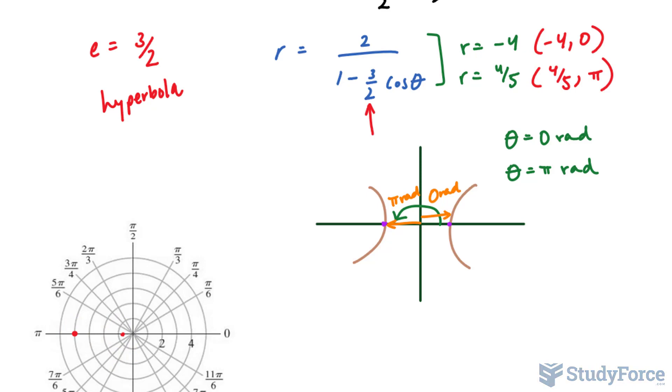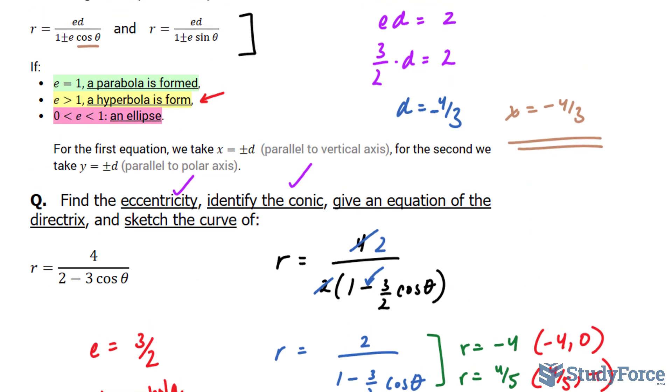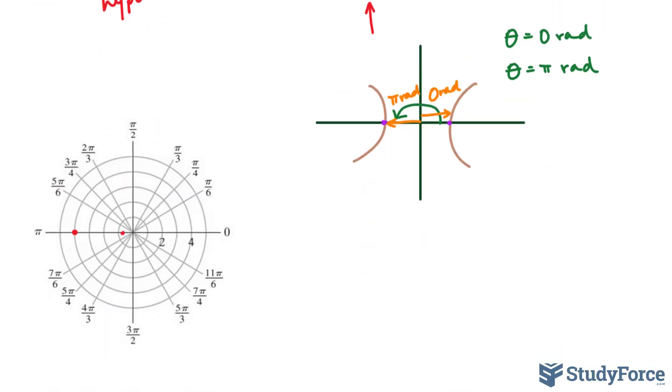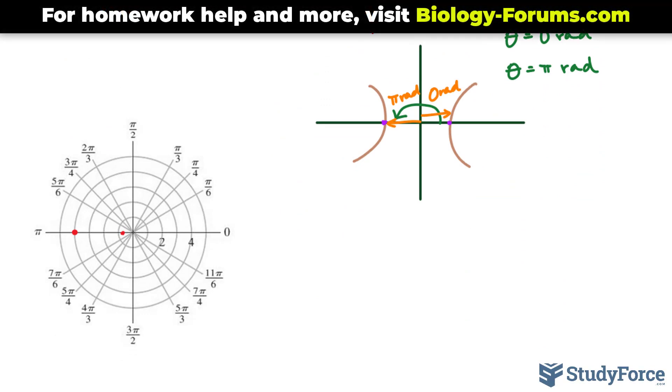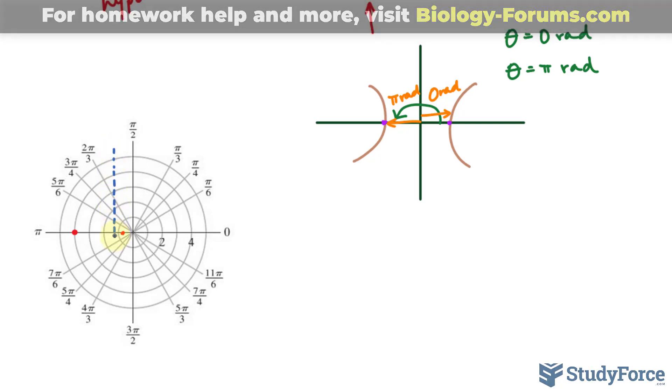The directrix, the equation, was negative four over three. That's equivalent to negative one point three three repeating. So our directrix will be somewhere along here, one third of the way between the two rings.